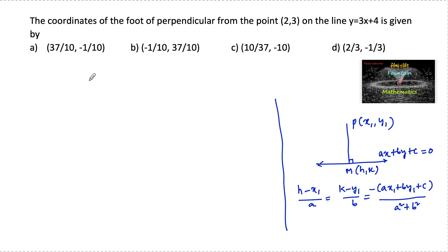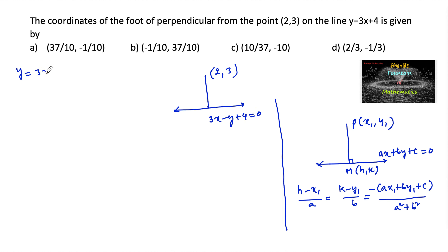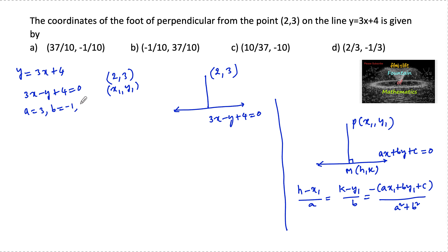Comparing with this formula, we have the point (2, 3) as (x1, y1). The line equation y = 3x + 4 can be rewritten as 3x - y + 4 = 0. So a = 3, b = -1, and c = 4. Let (h, k) be the foot of the perpendicular.